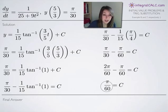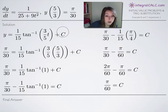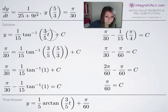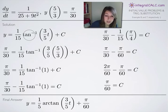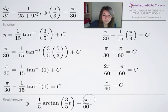Now we plug C = π/60 back into our equation. Note: arctan is the same as inverse tangent — a cleaner notation. So our final answer is y = (1/15)·arctan(3t/5) + π/60. Through trigonometric substitution, that is how you solve this initial value problem.